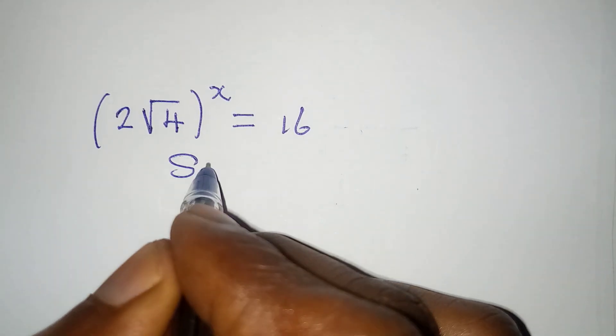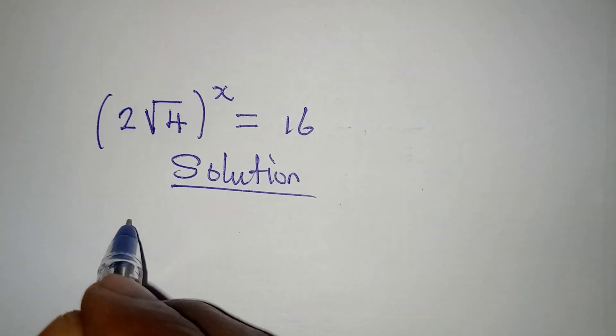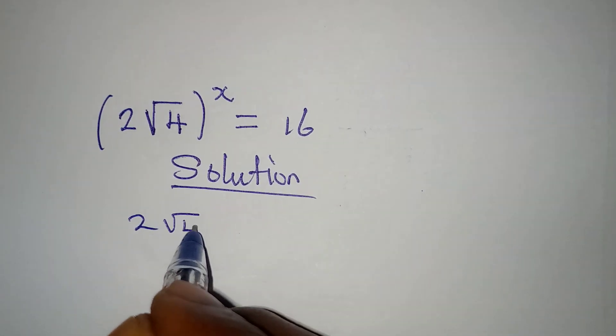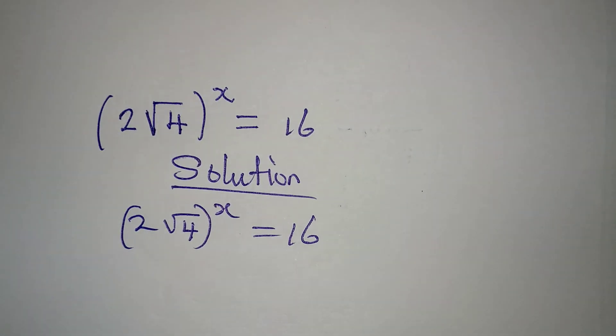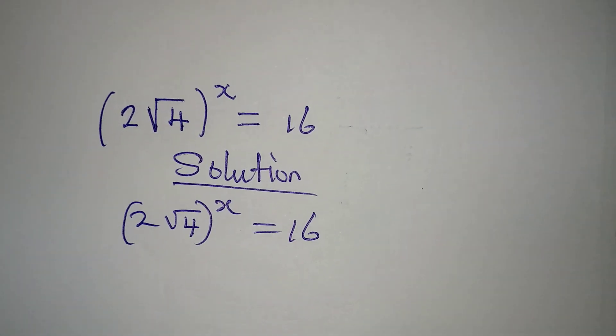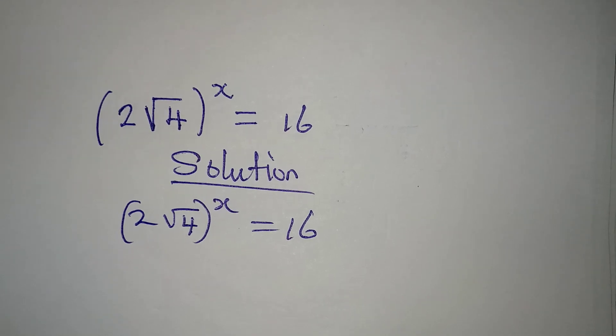Hello everyone, let us provide the solution to this problem. We have (2√4)^x = 16. How do we deal with this? I'm going to do this in two ways.